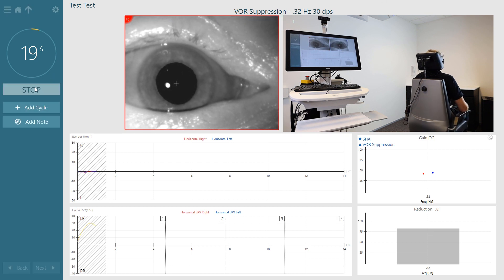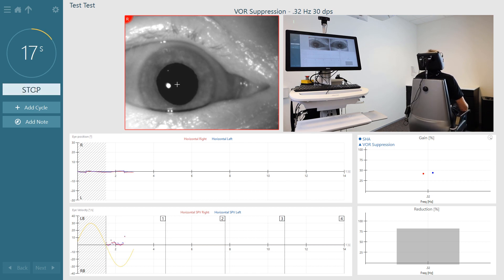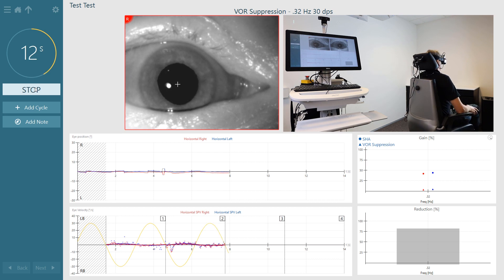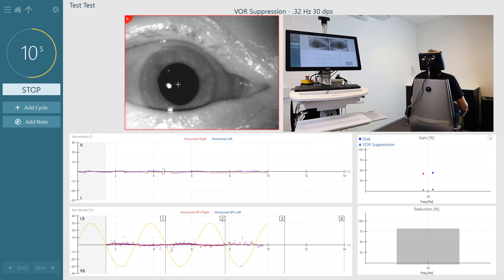As they have something to look at, they should be able to suppress the eye movements that are generated by the chair movements. This is a centrally regulated process.